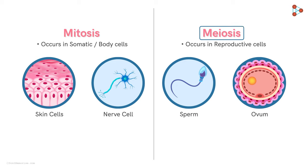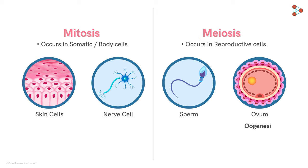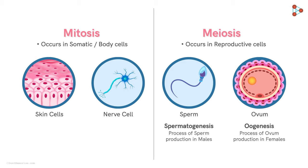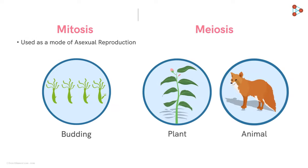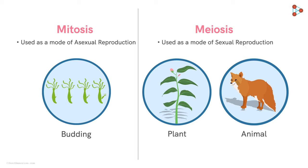The process of meiosis has different names in both sexes. Due to the different cells produced as an end result, meiosis is also referred to as oogenesis — the process of ovum production in females — and spermatogenesis — the sperm production process in males. Another major difference is that mitosis is used as a mode of asexual reproduction in lower organisms, while meiosis helps in forming gametes for sexual reproduction.